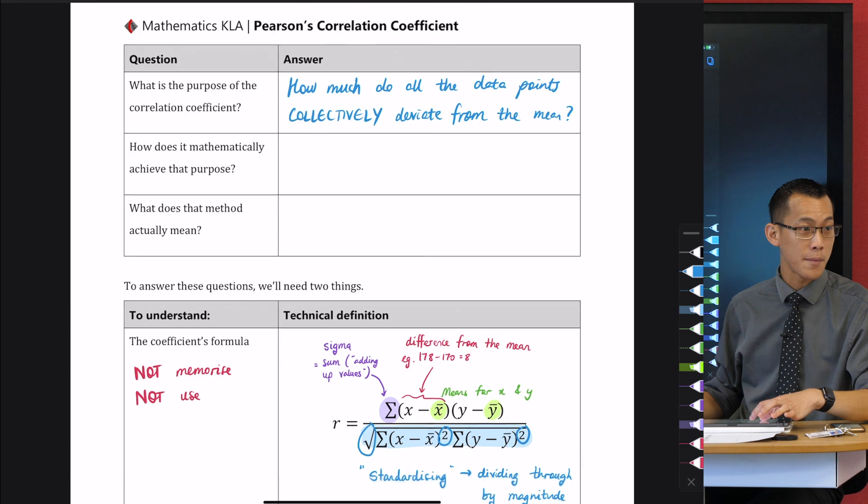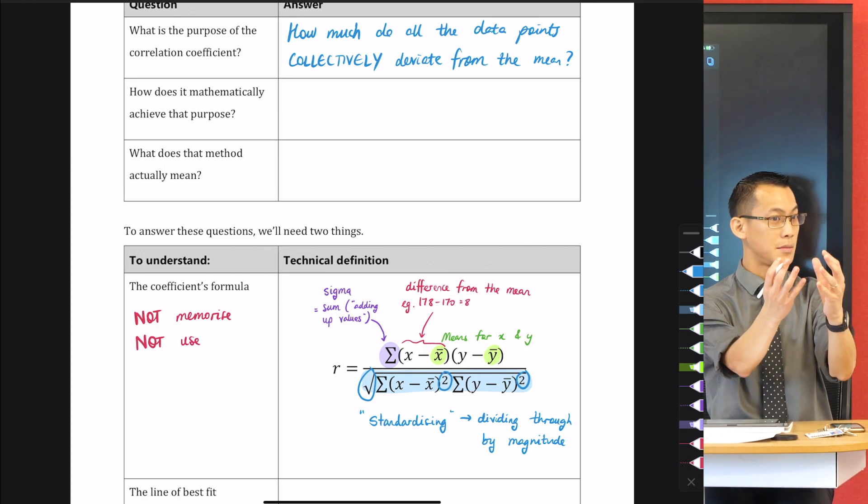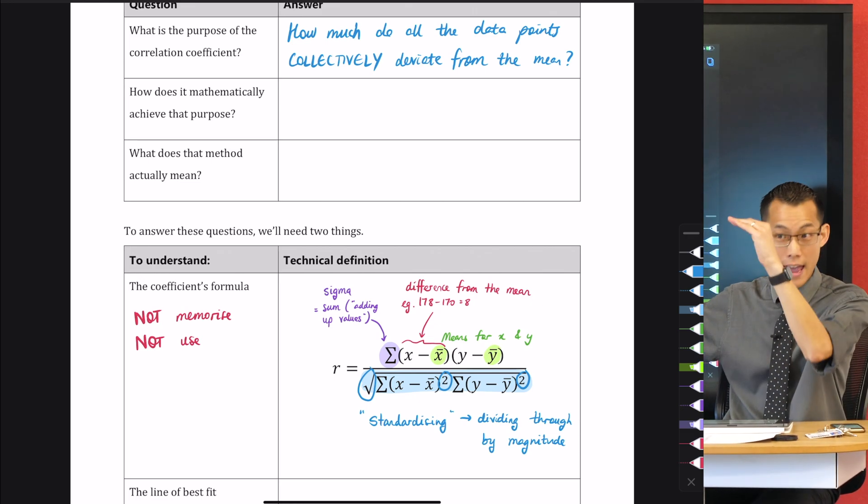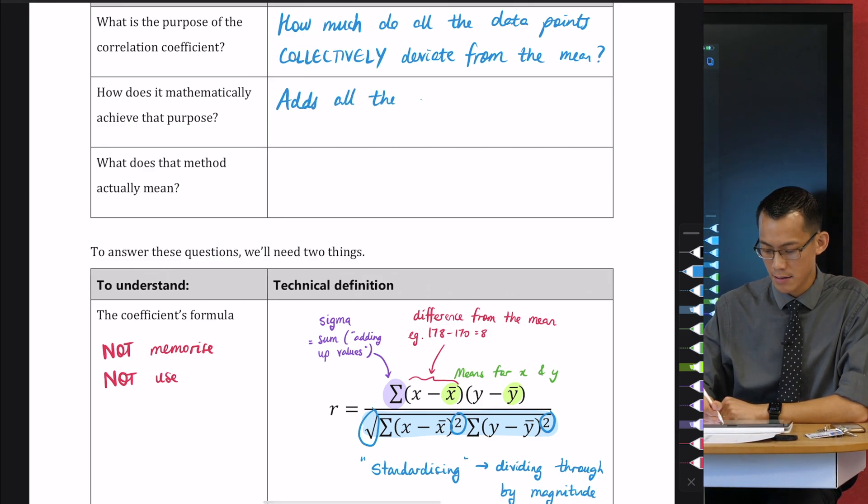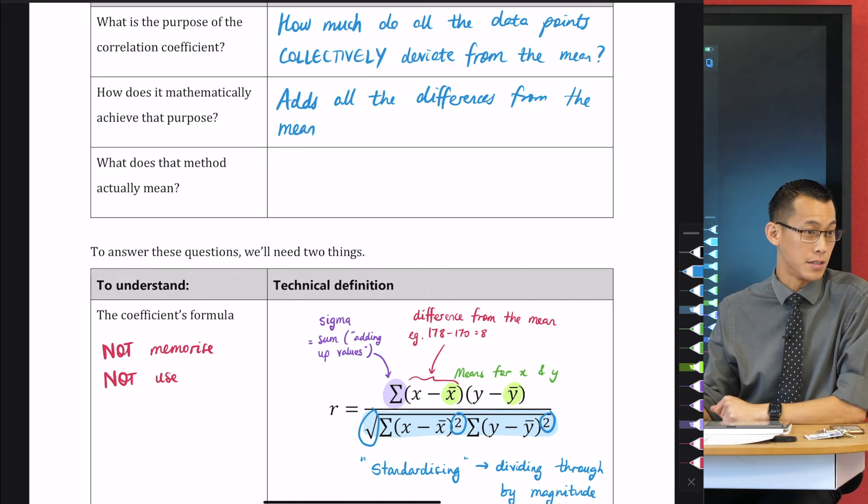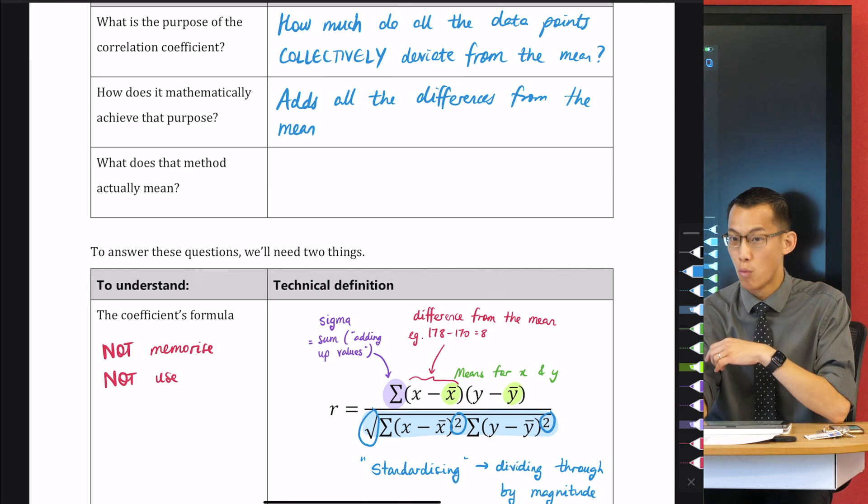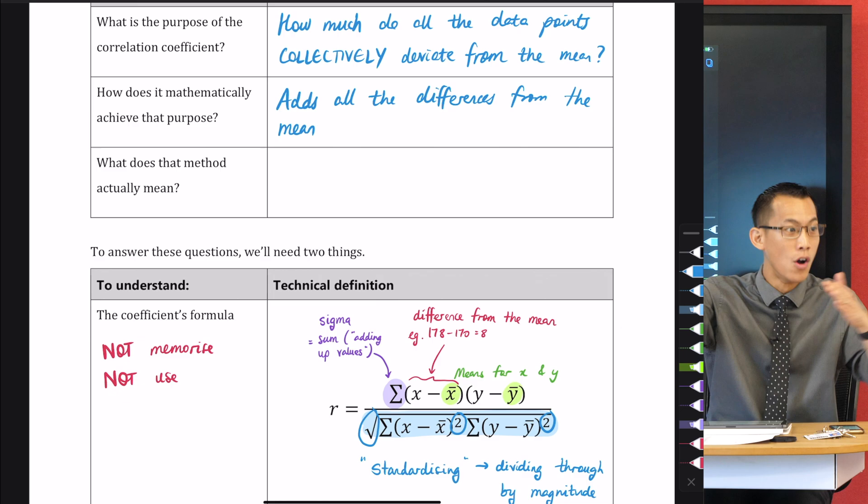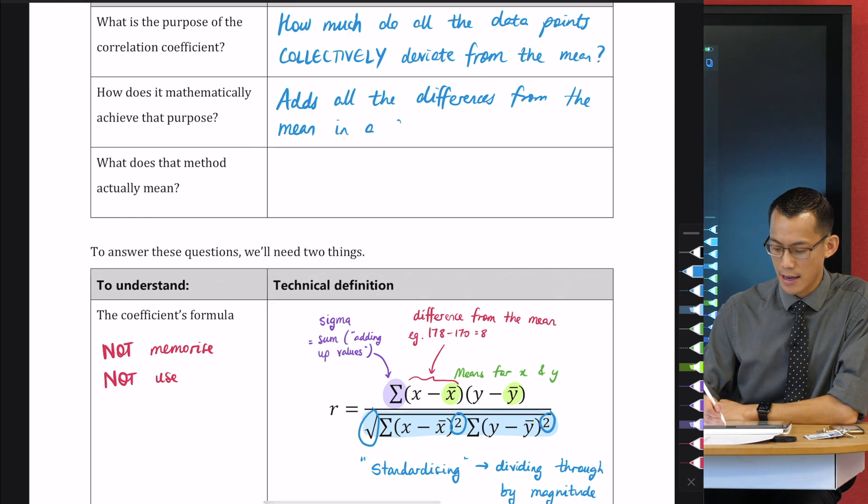Now, how does it mathematically achieve that purpose? Let's have a look at what's going on here in the formula. It calculates x differences and y differences, multiplies them together to get a single number, and then you add that for every single data point. So what it does is it adds all the differences from the mean, and then what was that denominator doing? The word we used was it standardizes, so we can actually compare these things. So every correlation coefficient you will see, every r you will see is between negative one and one, which is like a percentage. Negative 100% all the way to 100%. You can't get any bigger or smaller than that. So it adds all the differences from the mean in a standardized way.